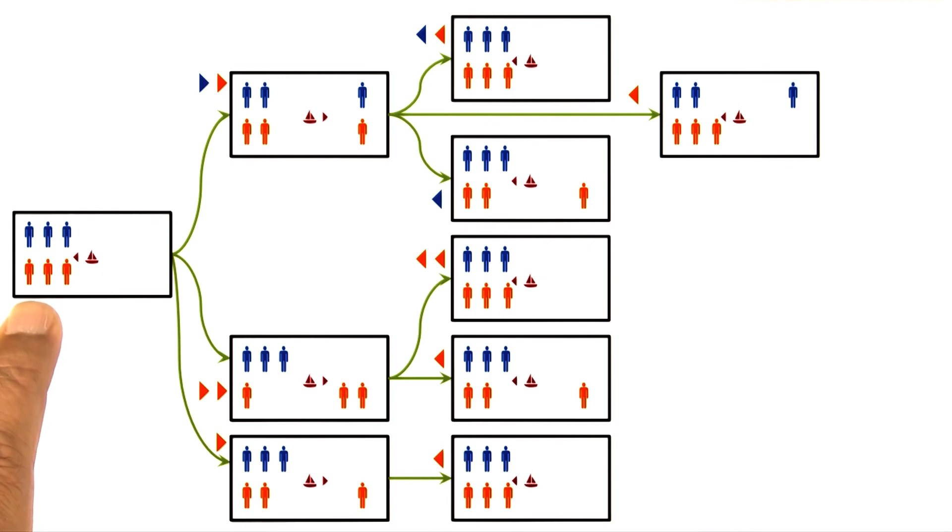One could make the generator itself smarter and say that the generator will not even generate these three states, but it will know that it should not generate states that have already appeared.